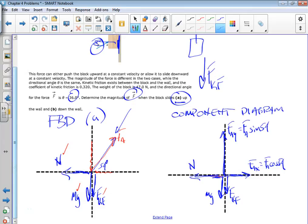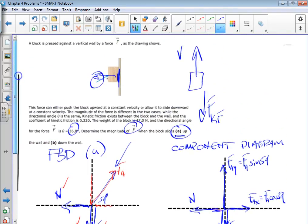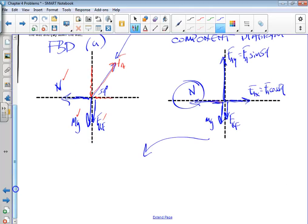Now we have our component diagram. We can use this to make an expression. The block is not accelerating—it's not accelerating left to right because it's not even moving that way either. In that case, we just know normal force and the x component of the applied force are the same. So in the x dimension, I know that the normal force is equal to the applied force times the cosine of 54 degrees.